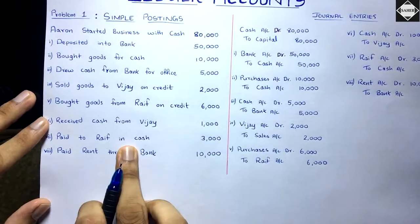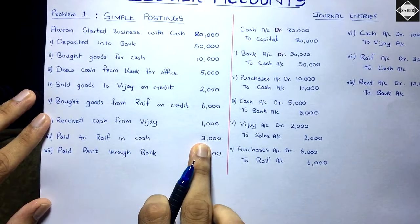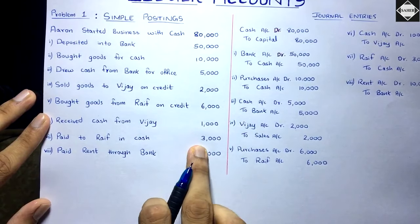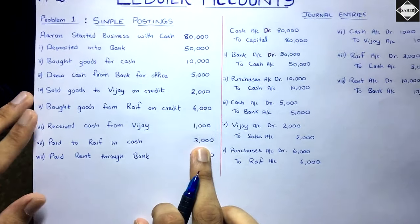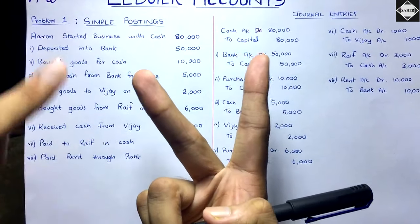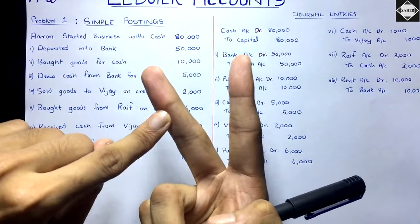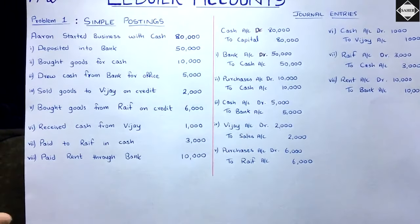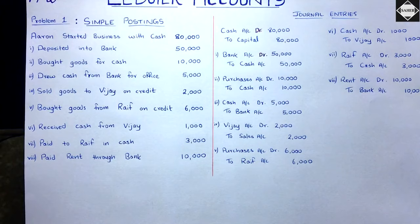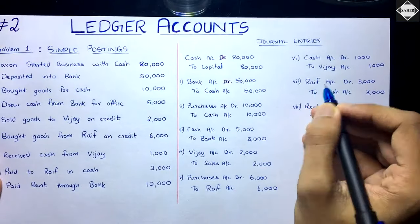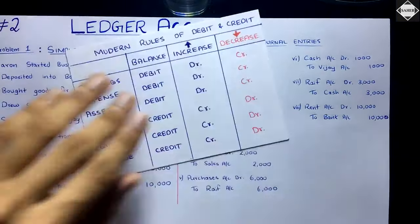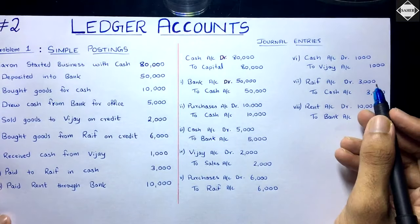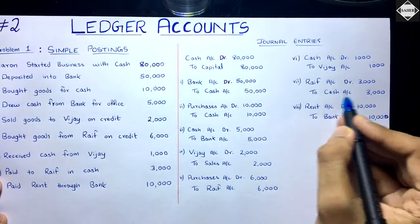Next: paid to Rife in cash 3,000. We owed him 6,000 but have paid 3,000. Rife Account is decreasing because paying reduces your liability — you no longer have that 3,000 obligation. Cash Account is also decreasing. So the entry is: Rife Account debit 3,000, to Cash Account 3,000. Whenever liability decreases, you debit that account, and the asset cash decreases so you credit it.